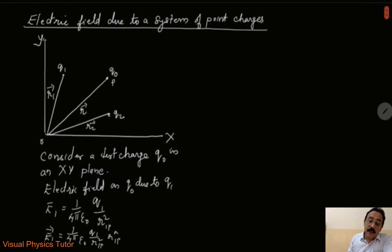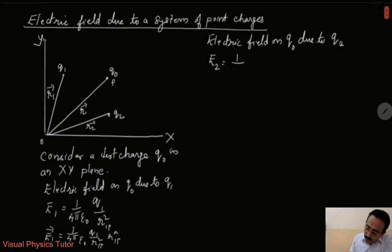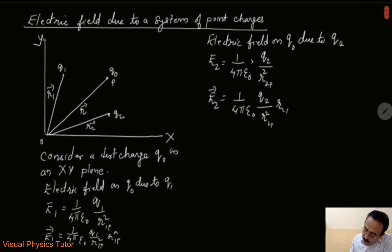Similarly, now we can calculate the electric field on q naught due to q2. So I can write here: electric field on q naught due to q2. This can be E2 is equal to 1 by 4 pi epsilon naught, q2 by r2p square. Now again in the vector form I can write E2 vector is equal to 1 by 4 pi epsilon naught, q2 by r2p square and r2 cap.